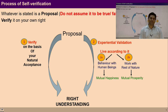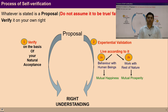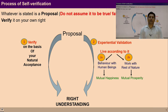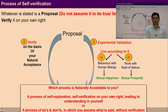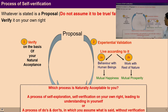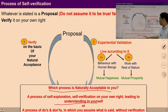I hope you are following it and are now aware. I hope now you access your natural acceptance when you make decisions, and you are able to see your feelings and thoughts — whether they are naturally acceptable to you or not. This process is going to help you in your self-study. You can ask yourself: which process is naturally acceptable — self-exploitation, self-verification, or a process of do's and don'ts?